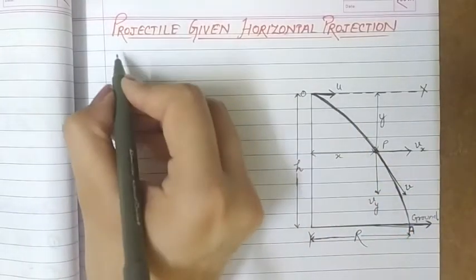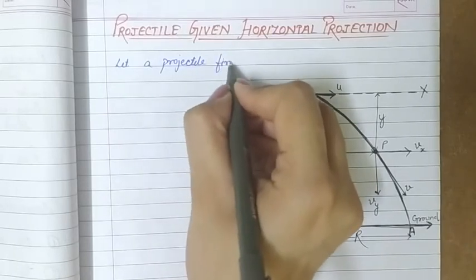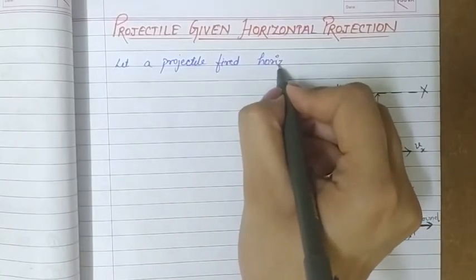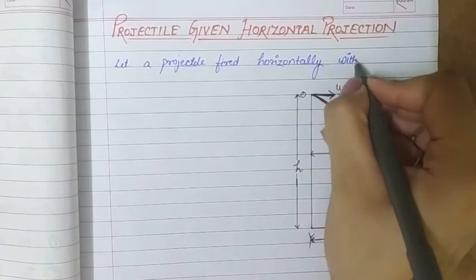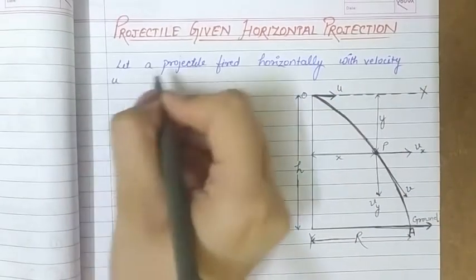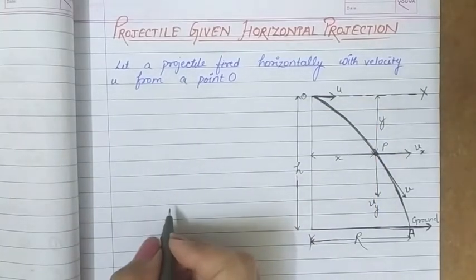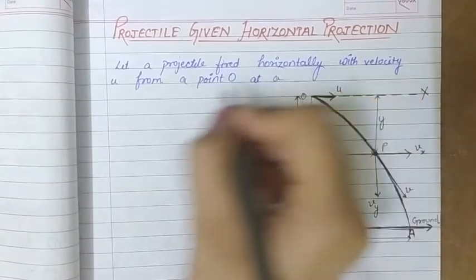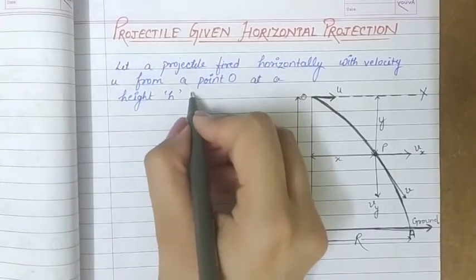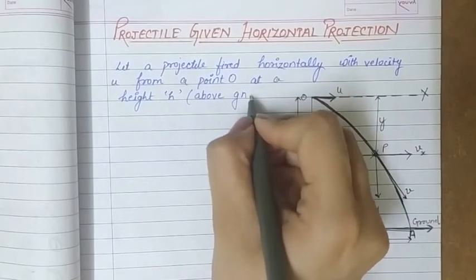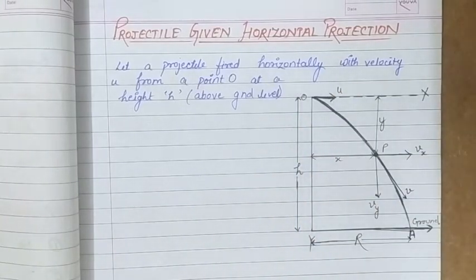Let a projectile be fired horizontally with velocity u from a point O. This projectile is launched from a certain height — small h — above the ground level. So the point from where the projection is being done is at that height above the ground.